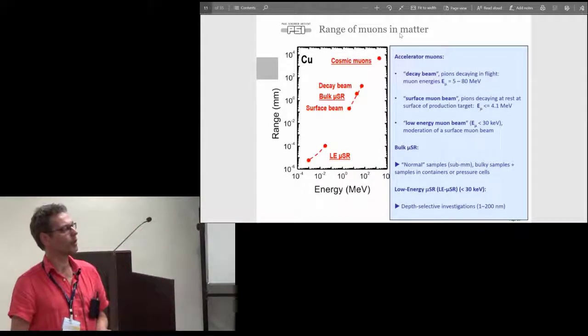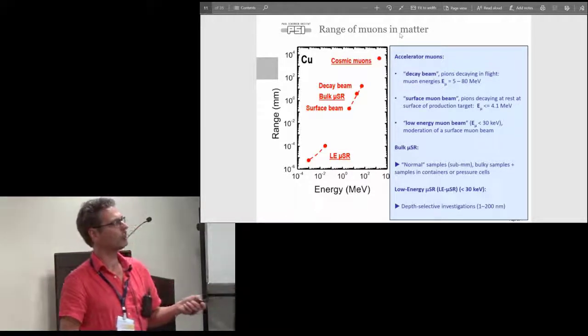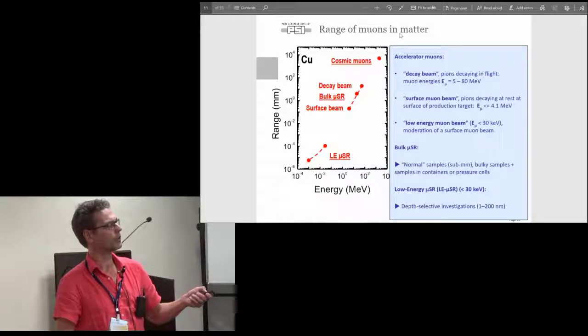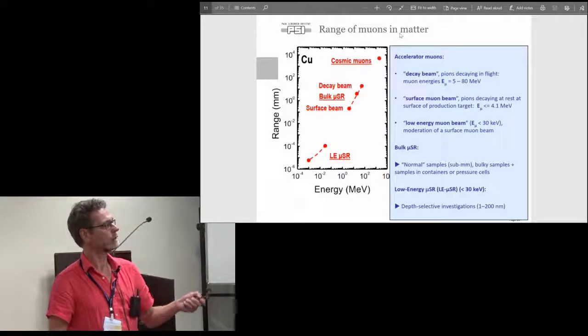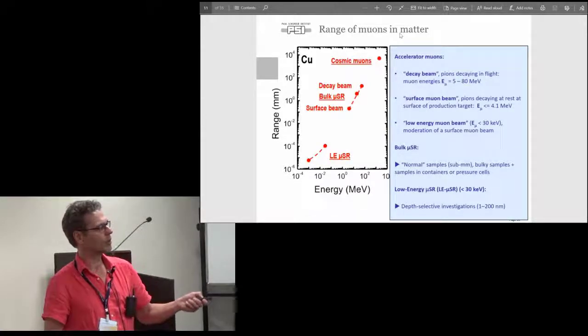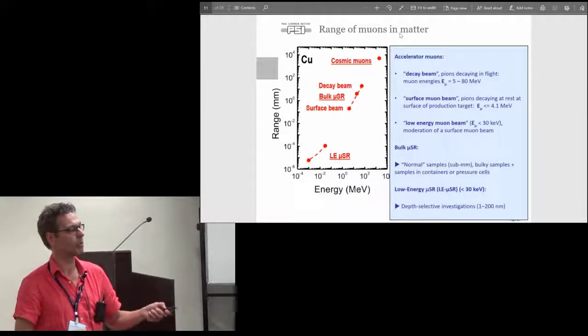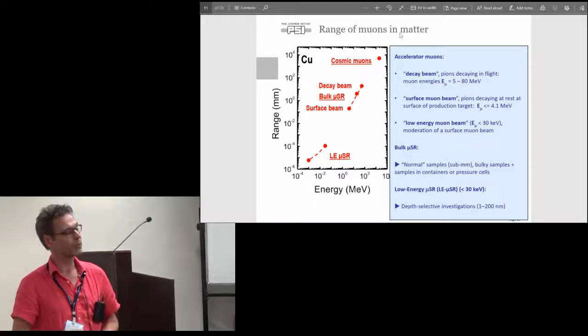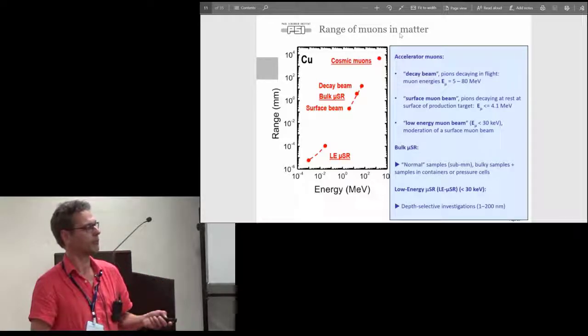This gives you an overview about the range. We see here the muon beams which are available at all the muon facilities from the surface muons up to the decay beams. The range is from micrometers to centimeters. The low energy muons in the kiloelectron volt range, this is in the nanometer range from a few nanometers up to two or three hundred nanometers. This allows you to apply low energy muons to thin film studies and heterostructures and other very interesting things.